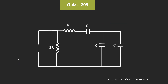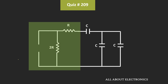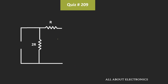Similarly, we will find the equivalent resistance of the circuit between these two nodes. If we see the equivalent circuit, then it will look like this. Here, this R equivalent is equal to the series combination of these two resistors, which is equal to R plus 2R. That is equal to 3R.